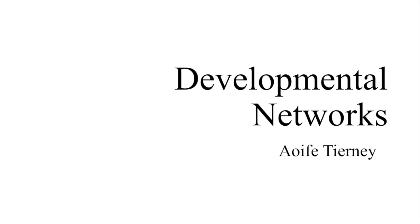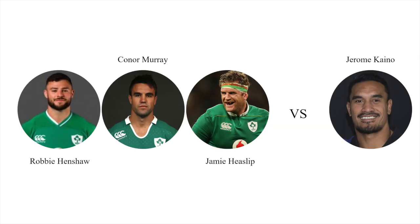This video uses an example involving four rugby players to explain a developmental network. Before 2016, Ireland's rugby team had never beaten the All Blacks, the New Zealand rugby team, although they had come close. The historic match occurred in Chicago, where the score was 33-29 to Ireland, with five minutes to go.